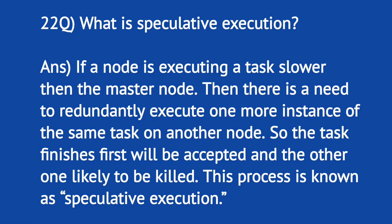What is speculative execution? If a node is executing a task slower than the master node, there is a need to redundantly execute one more instance of the same task on another node. The task that finishes first will be accepted and the other one will likely be killed. This process is known as speculative execution.